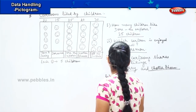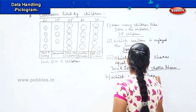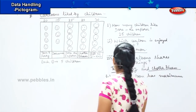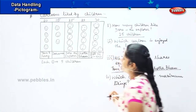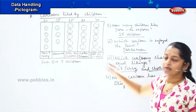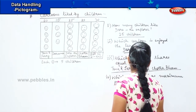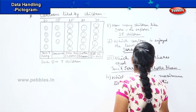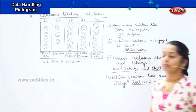The next question is: which cartoon has maximum liking? Which cartoon is loved by the kids the most? Looking at the figures, the maximum is 30 kids. So the cartoon with maximum liking has 30 children.